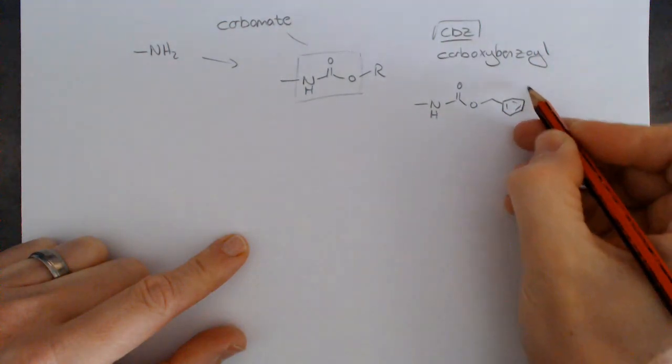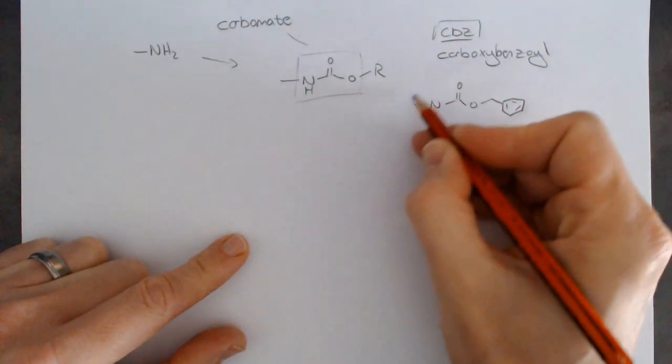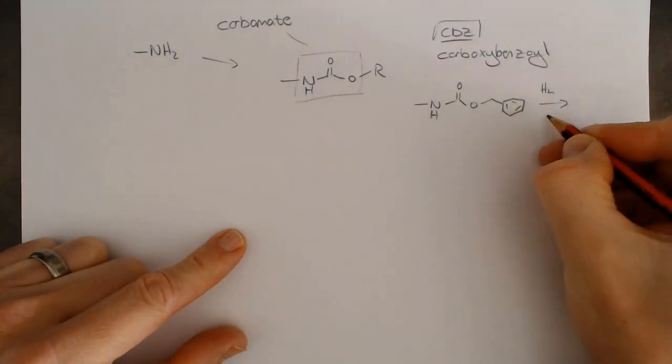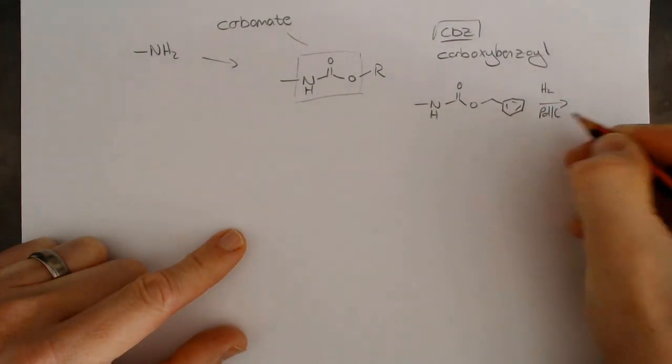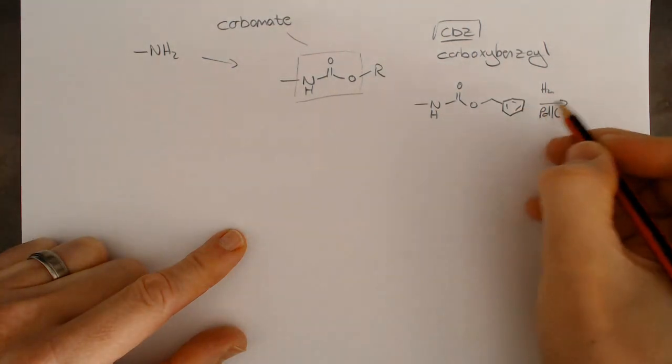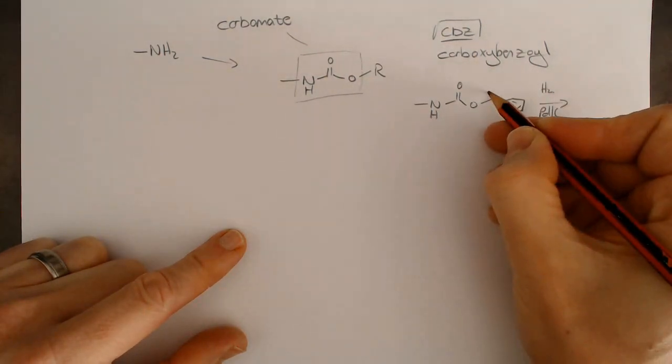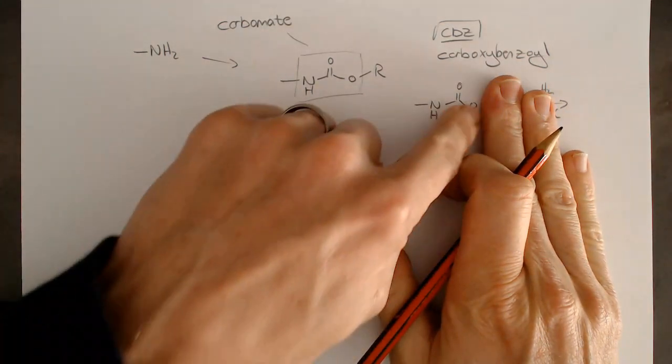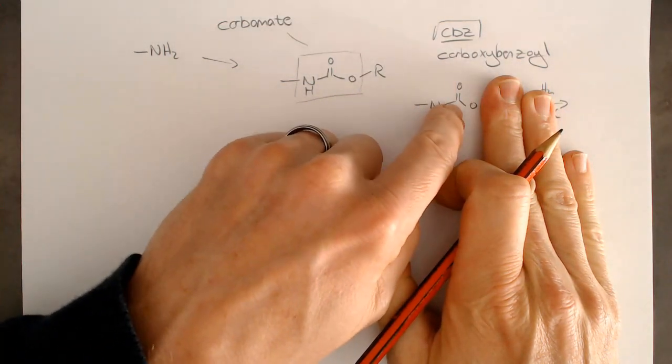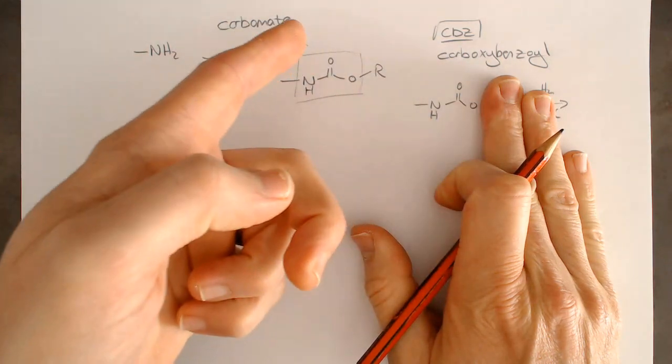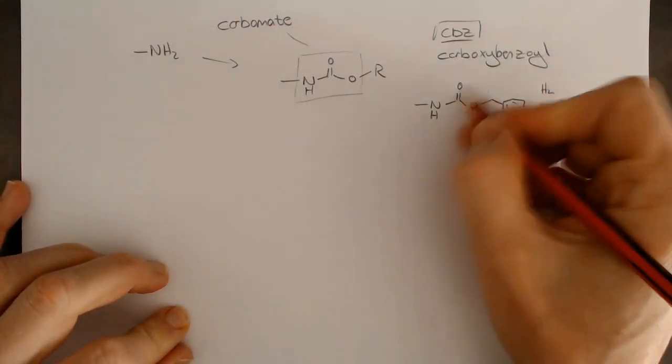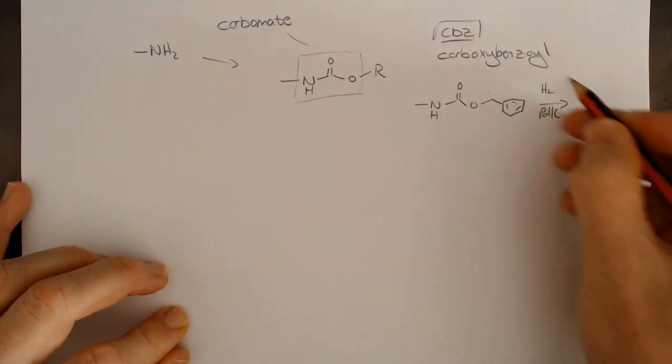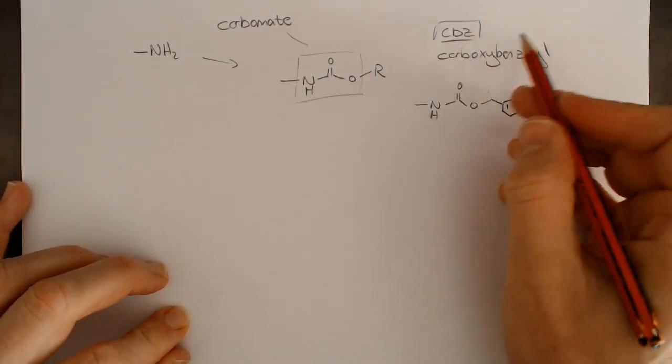Immediately from what we've looked at with the ethers, the deprotection of this, what's really nice, is we can deprotect using hydrogenation conditions again as well. Just like a benzyl group, when we hydrogenate it, this cleaves this bond. We get toluene. The carbamate part, that's just CO2 which eliminates and leaves us with the amine.